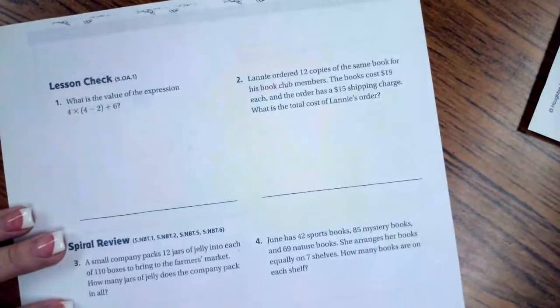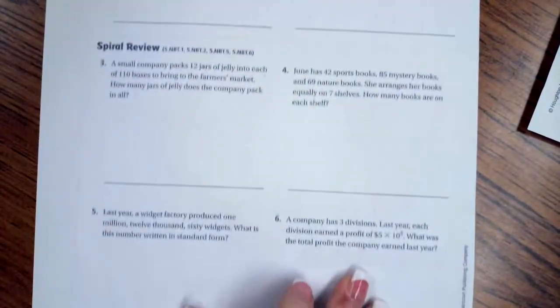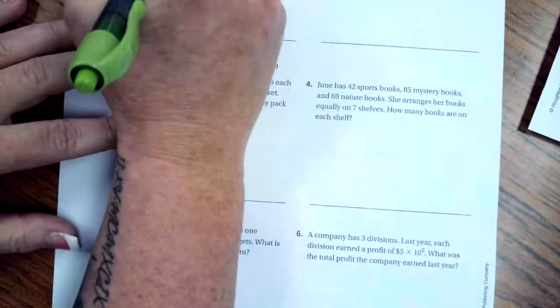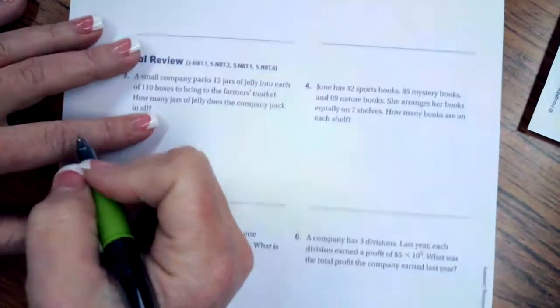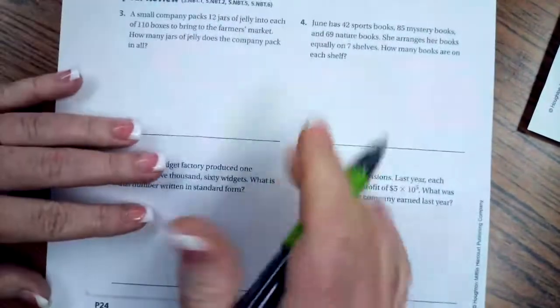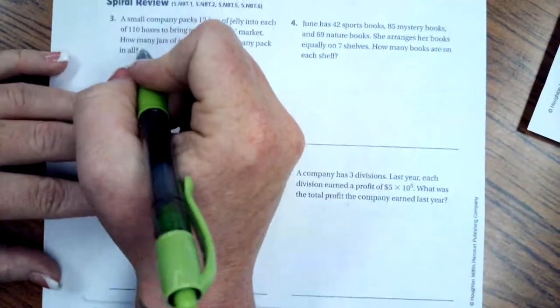We're going to go over onto the back where you're going to do the lesson check. Just like always, we're going to go down and do the spiral review. What is the value of the expression? Well, we already know using PEMDAS, we have to do the... Oh, nope. That was the lesson check. See? I already did that again.